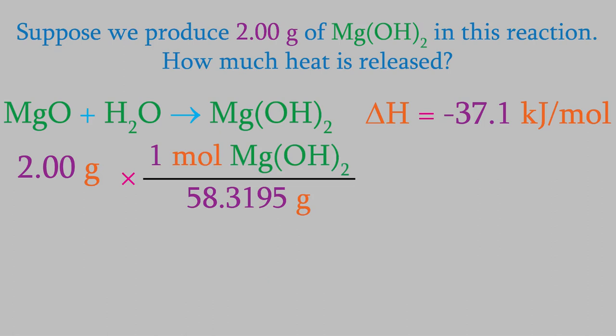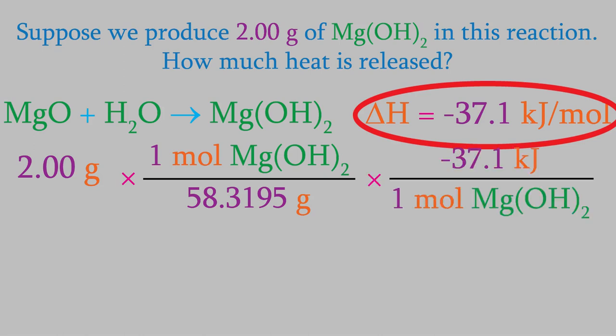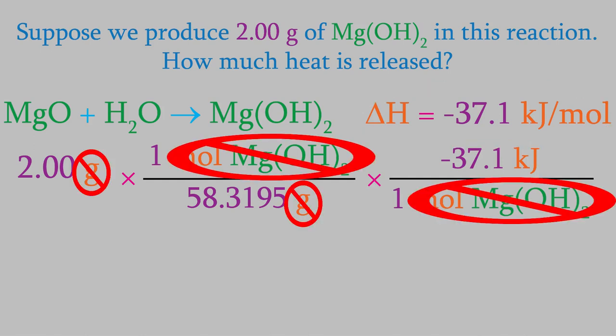We find that one mole of magnesium hydroxide weighs 58.3195 grams, so that's our conversion factor. We want the grams to cancel, so they go in the denominator. We then add one more conversion factor to convert from moles to kilojoules: the reaction releases 37.1 kilojoules per mole, so one mole goes in the denominator and negative 37.1 kilojoules goes on top. The units cancel, leaving us with a final answer of negative 1.27 kilojoules.